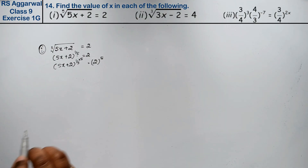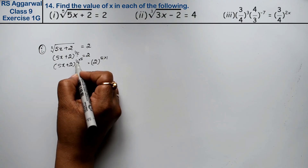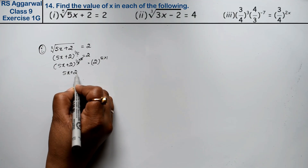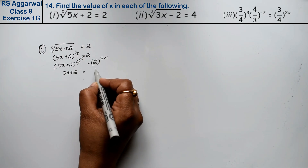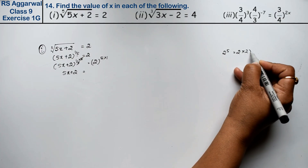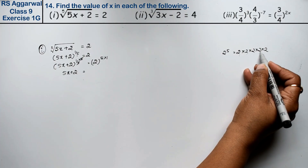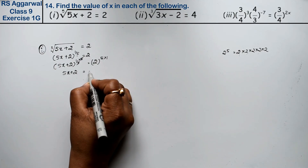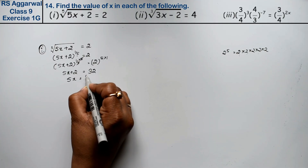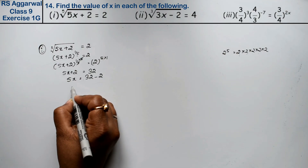Multiplying both sides by power 5, the 1/5 and 5 cancel, so we get 5x + 2 equals 2 to the power 5. We calculate 2 to the power 5: 2×2=4, 4×2=8, 8×2=16, 16×2=32. So 5x + 2 = 32, meaning 5x = 30, and x = 6.